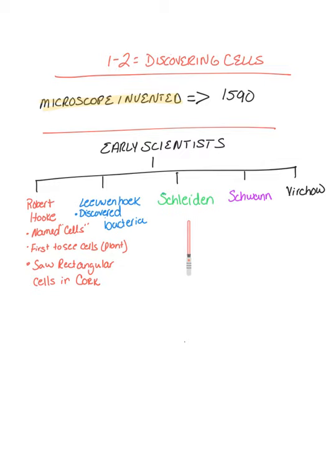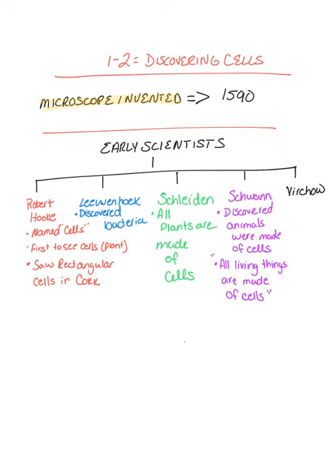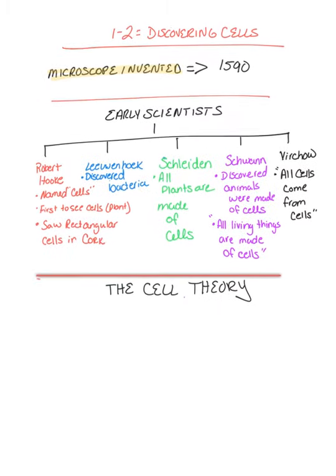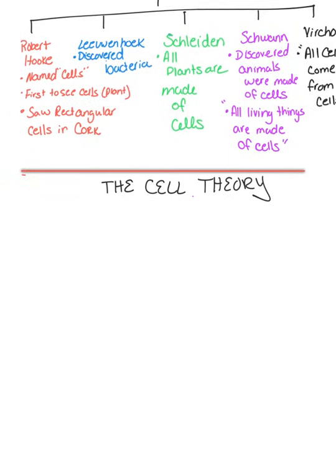Matthias Schleiden concluded that all plants are made of cells. Schwann concluded that all animals are also made of cells, thus stating that all living things are made of cells. And Virchow proposed that all cells come from cells.